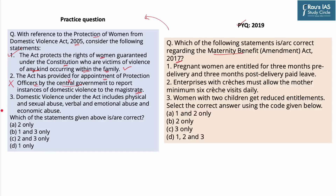The third statement — domestic violence under the Act includes physical, sexual, verbal, emotional, and economic abuse — is correct, as all these forms are part of the Act. Based on this, the answer to this question is option B. The answer to the corresponding UPSC question would be option C — that is, only statement 3 is correct.